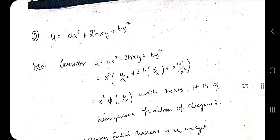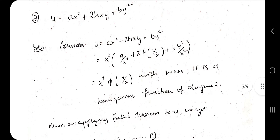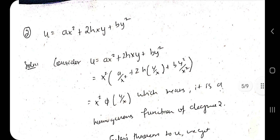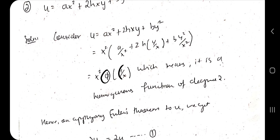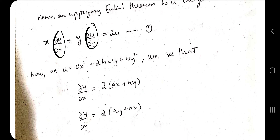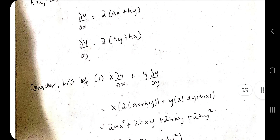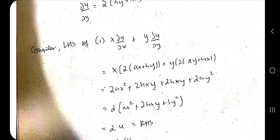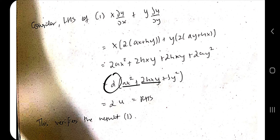For the second Euler's theorem example, u is given as a quadratic function (ax² + 2hxy + by²). First prove it is homogeneous by taking x² outside — the highest term — leaving terms expressible as φ(y/x). The degree n = 2, so the expected answer is 2u. After finding ∂u/∂x and ∂u/∂y and adding x·(∂u/∂x) + y·(∂u/∂y), we get 2(ax² + 2hxy + by²) = 2u. Result verified.